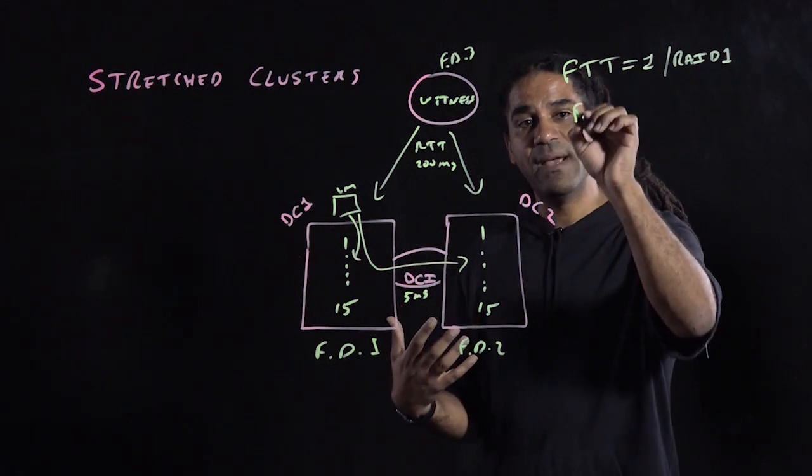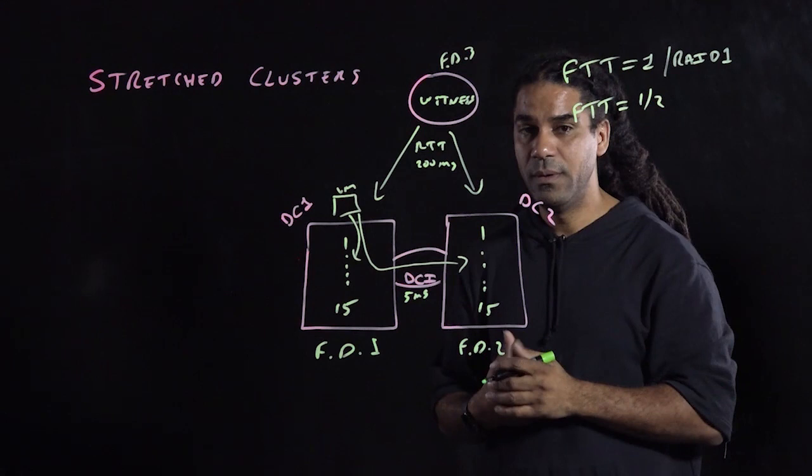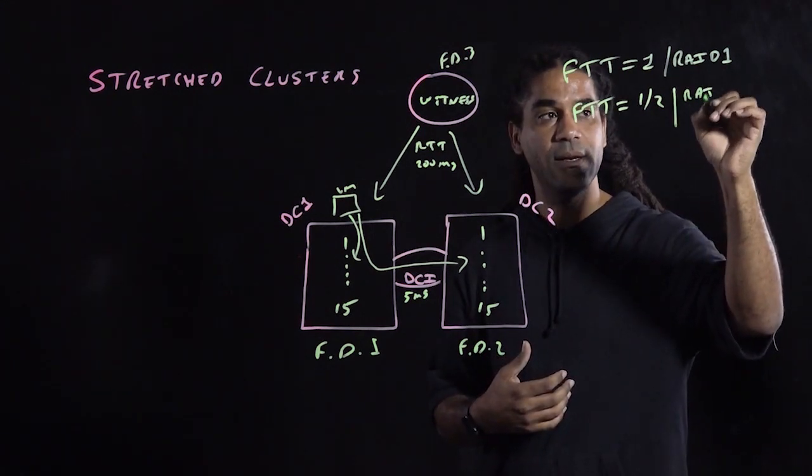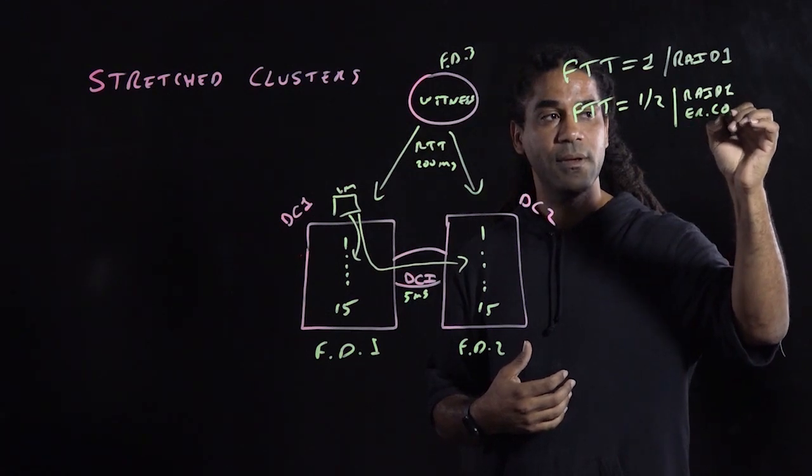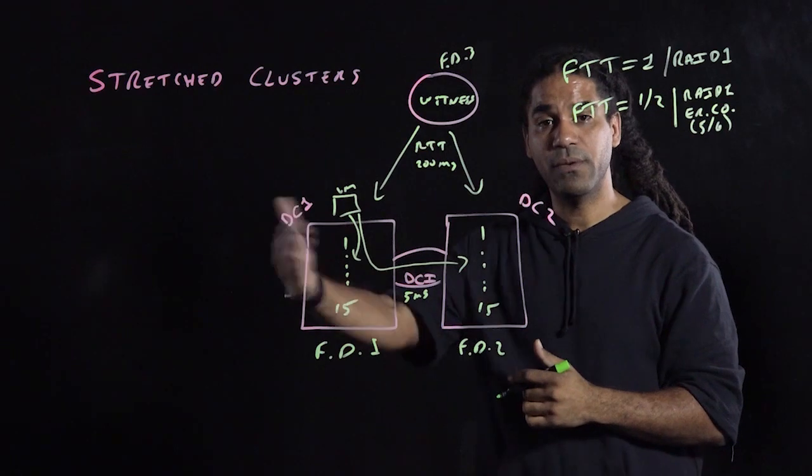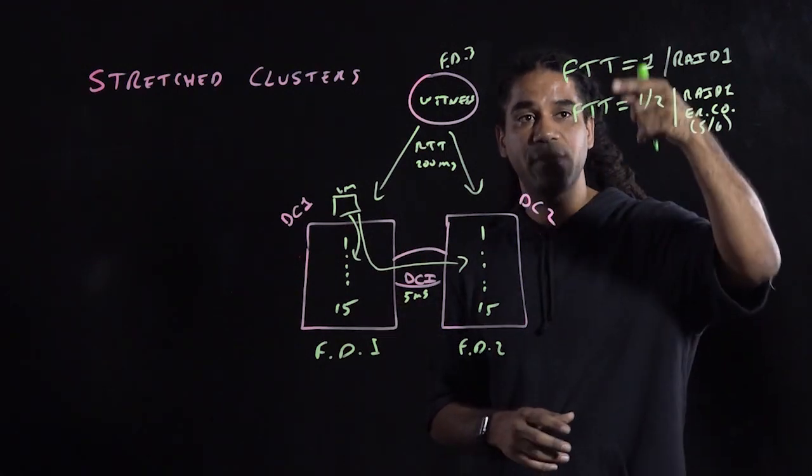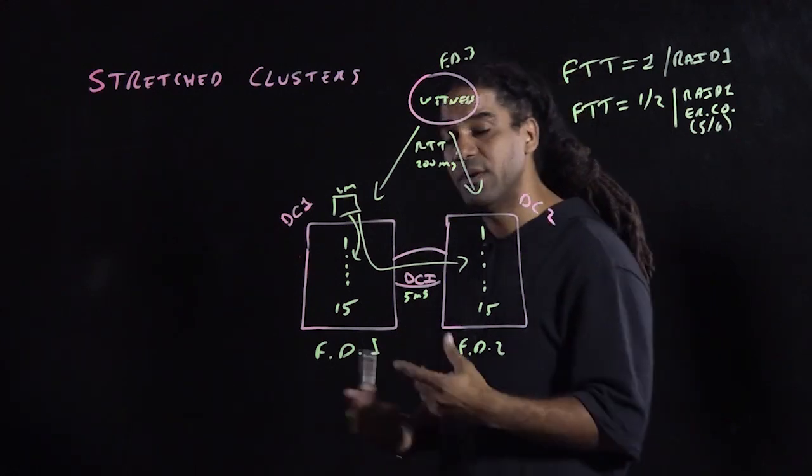Therefore, you can have a second failure to tolerate of one or two, with a method of RAID one or erasure coding of RAID five or six. And that's local. So both locations will have that. Now we have two failures to tolerate. And that's confusing, right? Using the same term for the same thing.